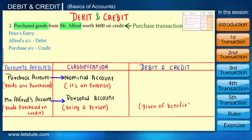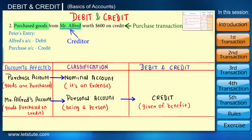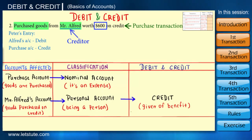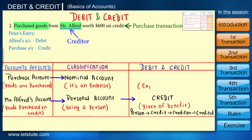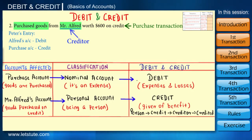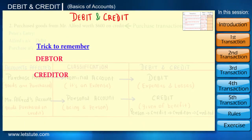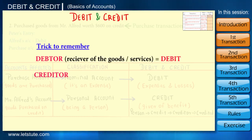When a person gives the benefit of goods or cash — that is, the creditor — his account is credited by the amount of the benefit given. So Mr. Alfred's account will be credited. The person who gives, the creditor, is credited. The purchase account is a nominal account and is an expense. All expenses and losses decrease the profit of the business and hence they are debited. One trick is that the words debtor and creditor themselves give the answer: debtor → debit, creditor → credit.